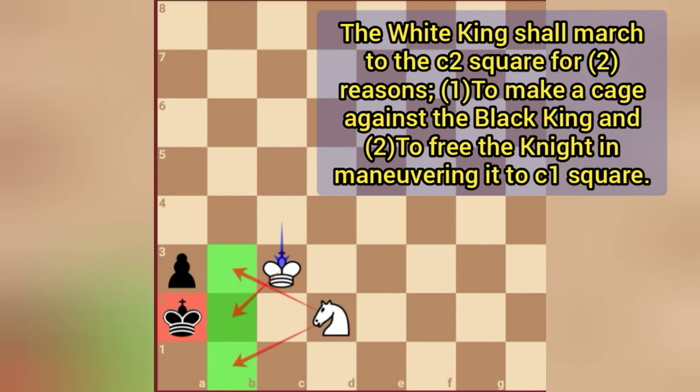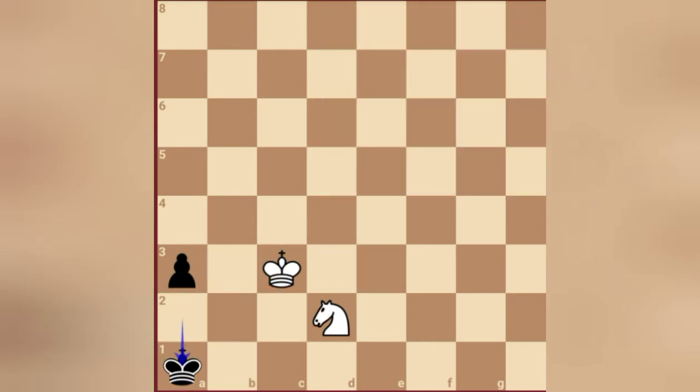After this, all the skipping squares of the black king are covered by the king and by the knight. There's no other possible move, so black will play a1. Then second, we will play king c2. The move a2 here is not possible because this is a checkmate, so black is forced to move king a2.